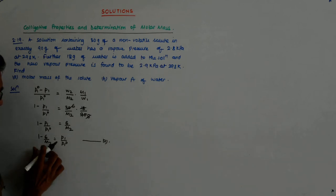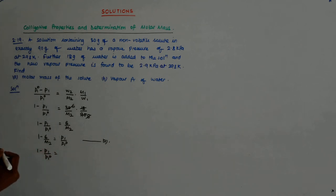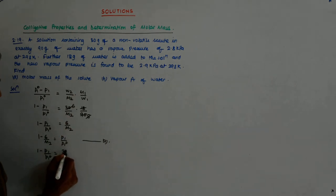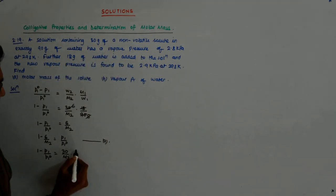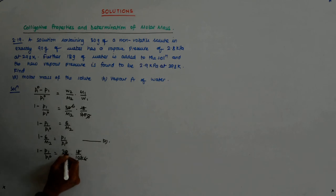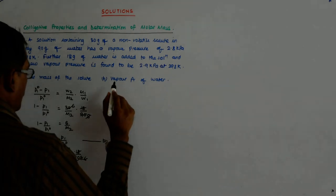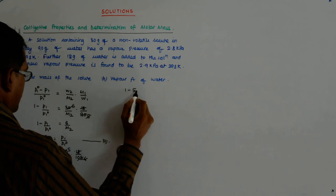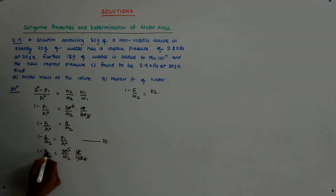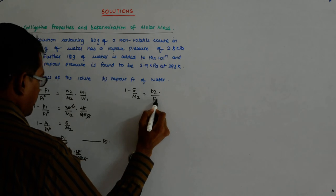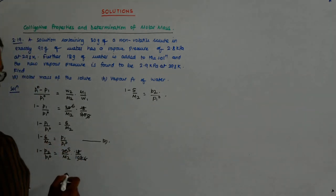The same, 1 minus P1 upon P1_0, right? That is still 30 upon M2. What is this? Now there is 108, so it is actually 18 upon 108. So this is 6, this is 5, so 1 minus 5 upon M2 is equal to P2 upon P1_0, right?